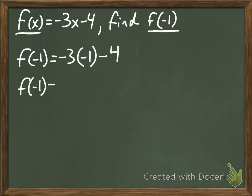I get f of negative 1 equals negative 3—oops, sorry, not negative 3. Negative 3 times negative 1 is positive 3, subtract 4. And then 3 subtract 4 is negative 1. So f of negative 1 is negative 1 with this function.